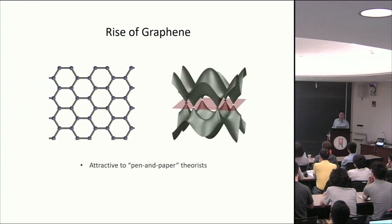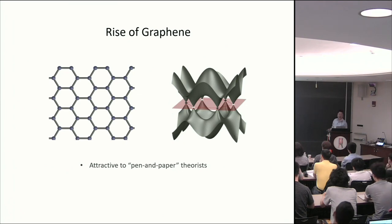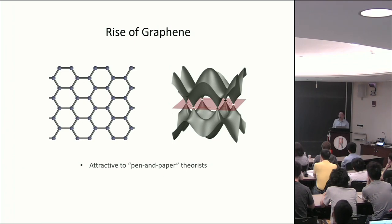Graphene is also very attractive to theorists, especially pen-and-paper theorists. Just using the simplest tight-binding model of the honeycomb lattice, one can solve the band structure. This serves as an extremely good starting point for understanding the numerous properties of graphene.